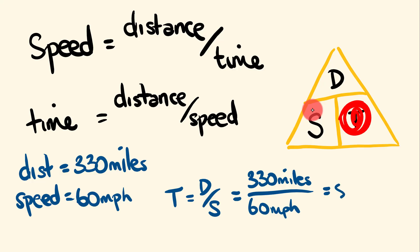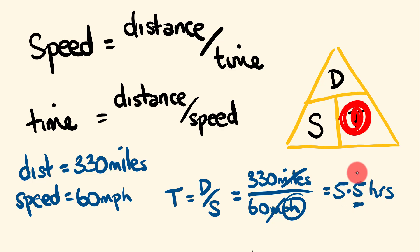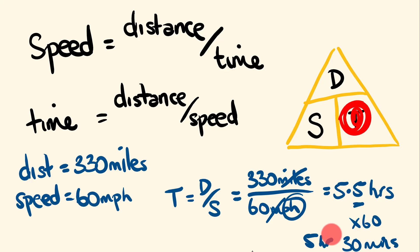Working that out gives 5.5. The units: miles divided by miles per hour leaves us with hours, so the answer is 5.5 hours. Now be careful — the 0.5 here does not mean 50 minutes. Time is out of 60 minutes, so 0.5 is half an hour, which is 30 minutes. To convert the decimal to minutes, multiply by 60: 0.5 × 60 = 30 minutes. So the answer is 5 hours and 30 minutes.